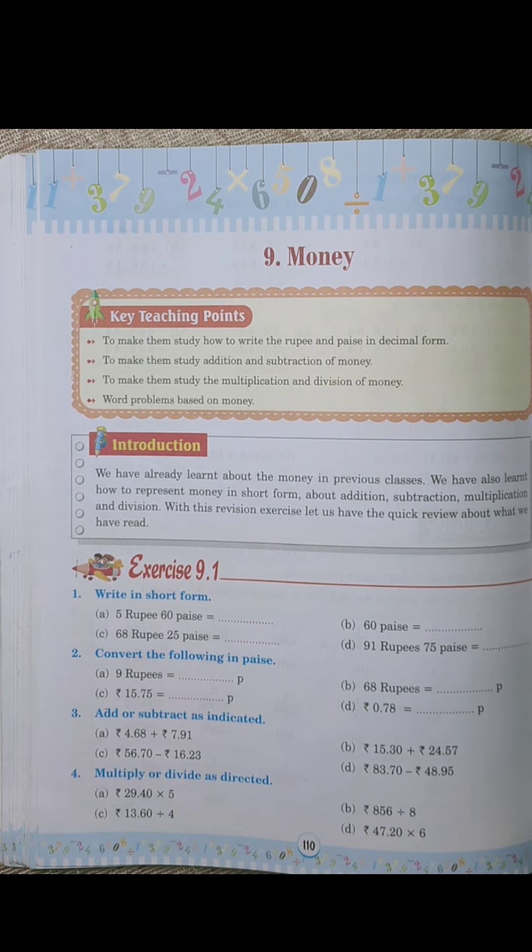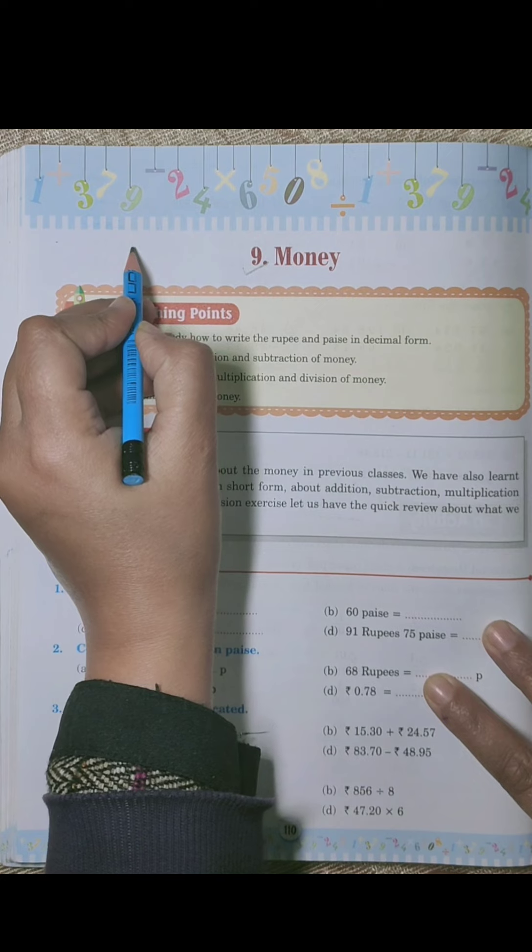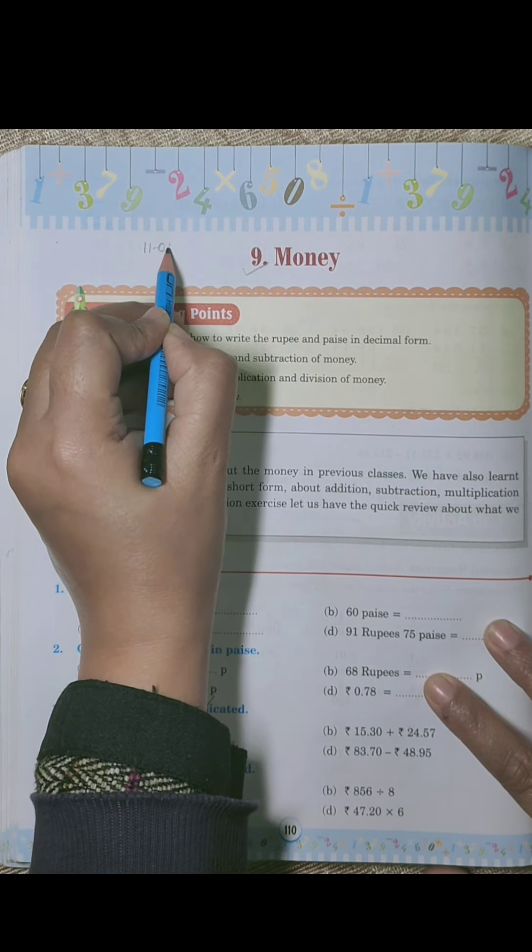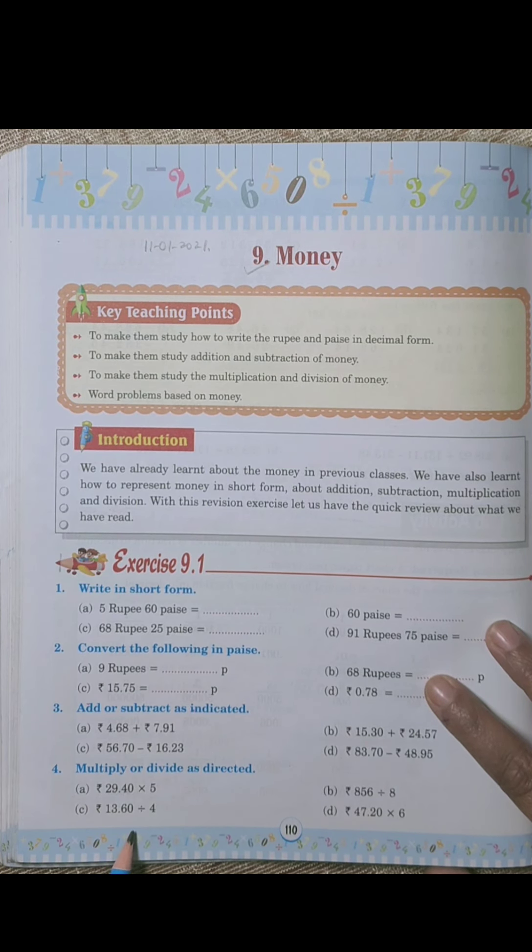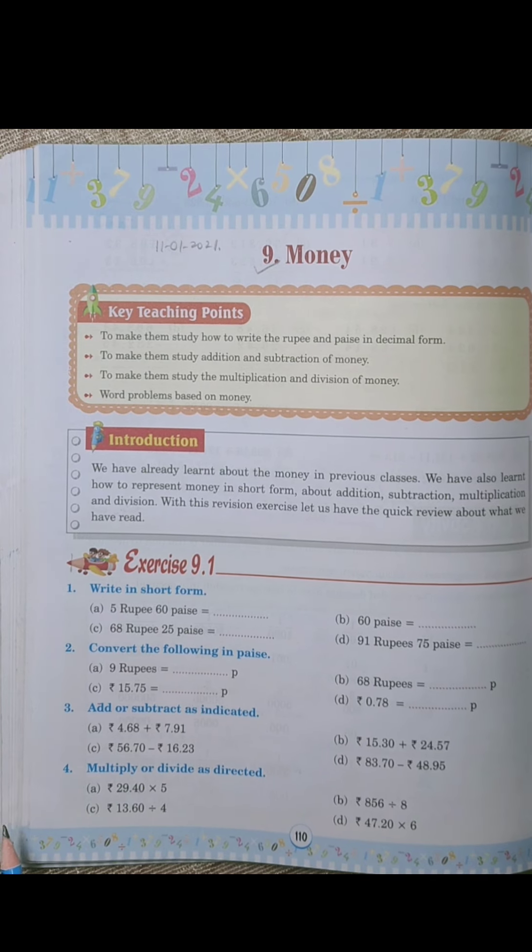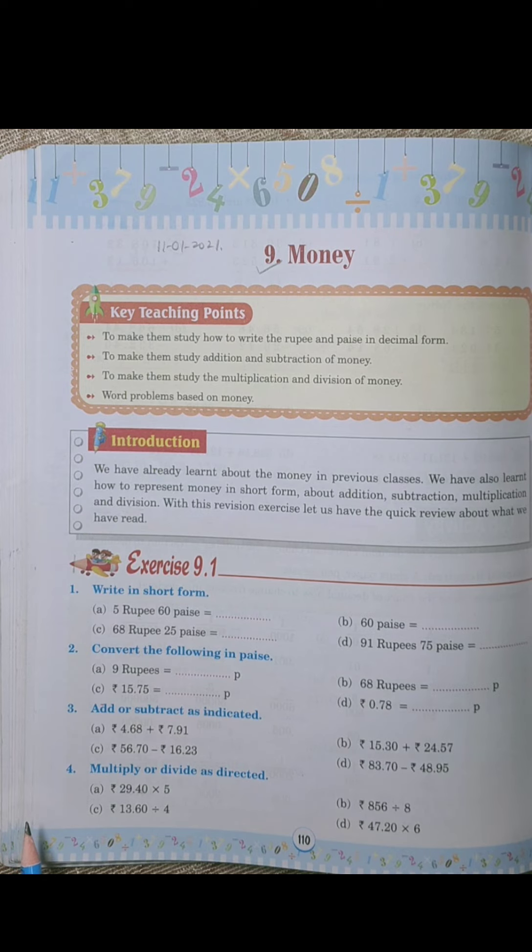Good morning students, today we are going to start the next chapter, it's chapter number nine: Money. So write down the date and day on page number 110. We already have learned about money in our previous class, right? We know how to represent money in short form, we know how to add and subtract these values.